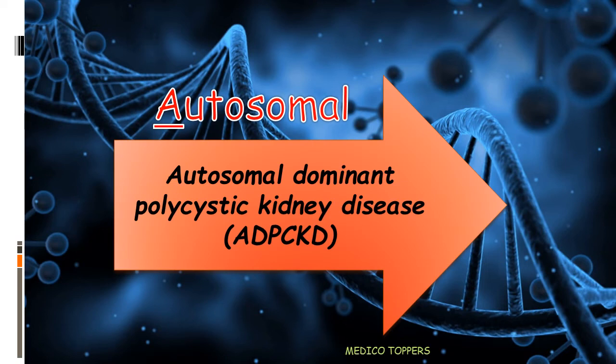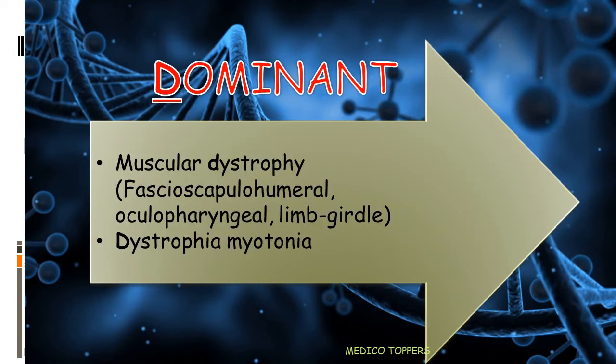'Autosomal' indicates Autosomal Dominant Polycystic Kidney Disease, where there is a problem in the polycystin gene 1 and 2 leading to this disorder. 'Dominant' — D stands for Dystrophies: facioscapulohumeral, oculopharyngeal, limb girdle, and myotonic dystrophy (dystrophia myotonia).